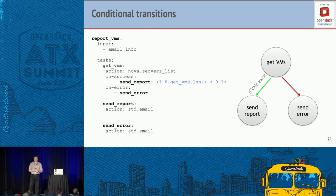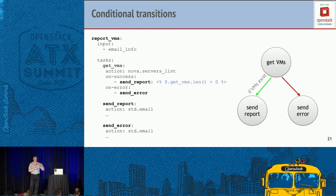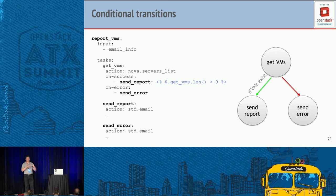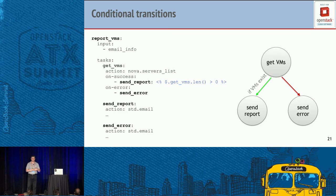Conditional transitions: this is a simple example of how we can make transitions between tasks conditional. We have three tasks: get VMs, send report, and send error. The first task gets all VMs; if the number of VMs in the tenant is greater than zero, we send the report. If not, we do nothing. If we were unable to get the VMs — something went wrong — we send the error. This uses YAQL expression language.